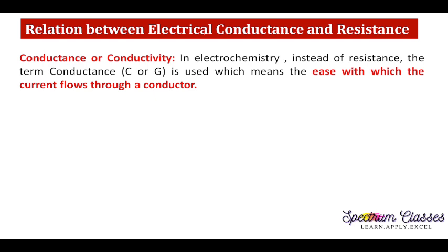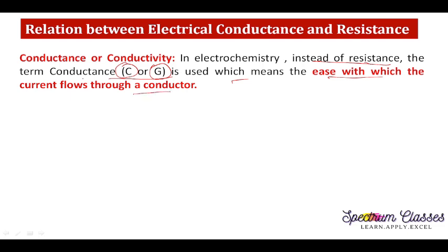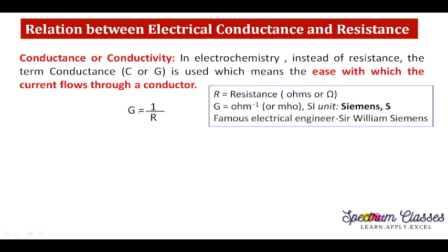Now, the relation between electrical conductance and resistance. In electrochemistry, instead of resistance, the term conductance is used — sometimes represented by C, sometimes by G. Conductance means the ease with which current flows through the conductor. The formula is G = 1/R, where R is resistance. The unit is ohm-inverse, and the SI unit is Siemens (S), named after the famous electrical engineer Sir William Siemens.